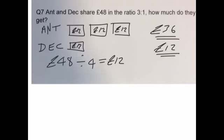So Ant gets £36. Dec gets £12. If we add those two together, we get a total of £48. So that's correct. So that's our final answer.